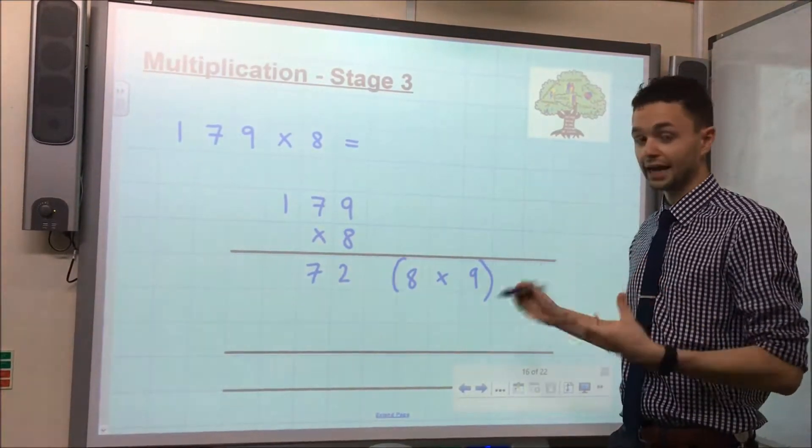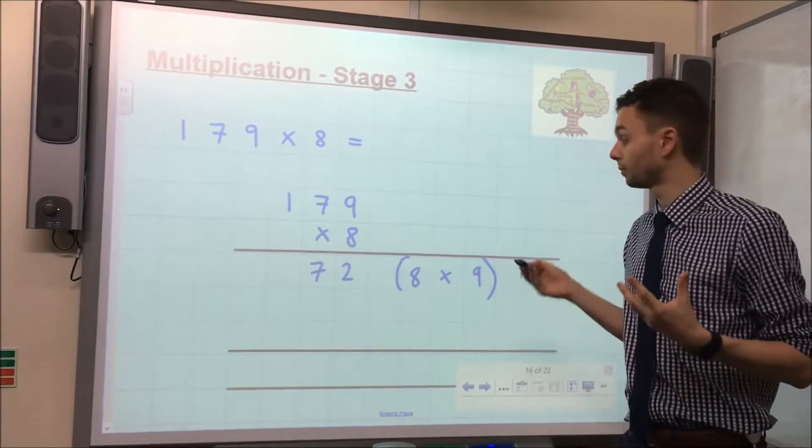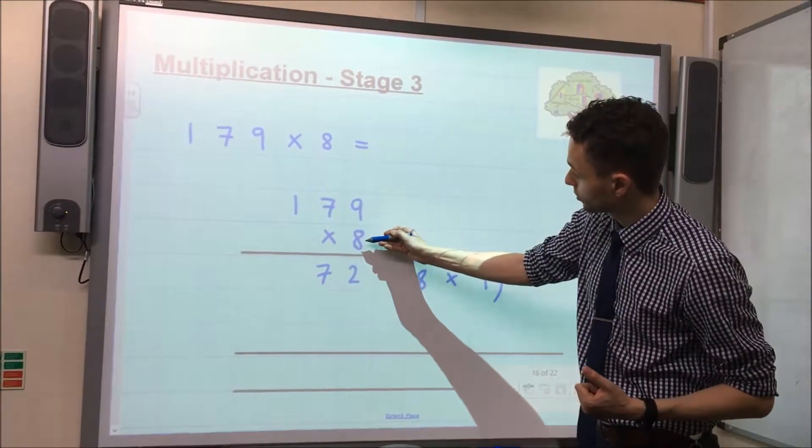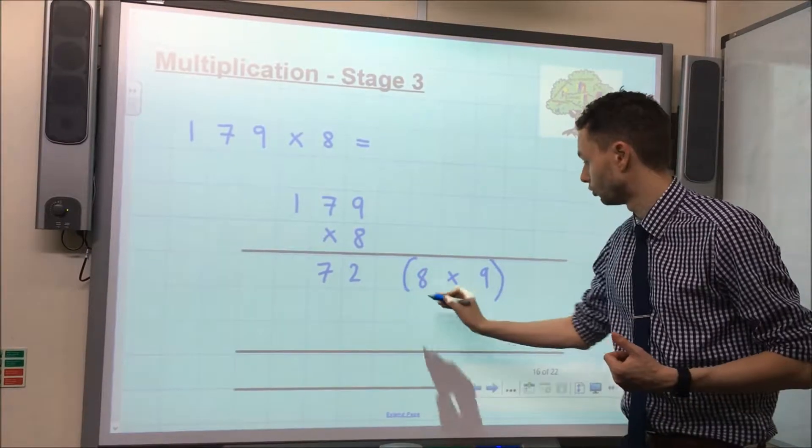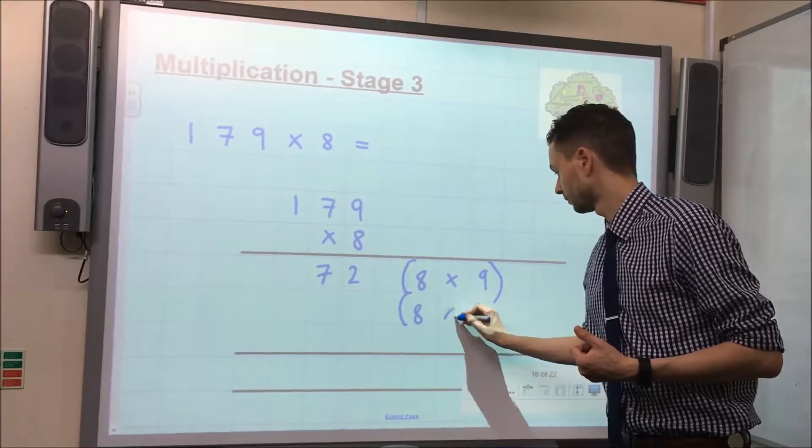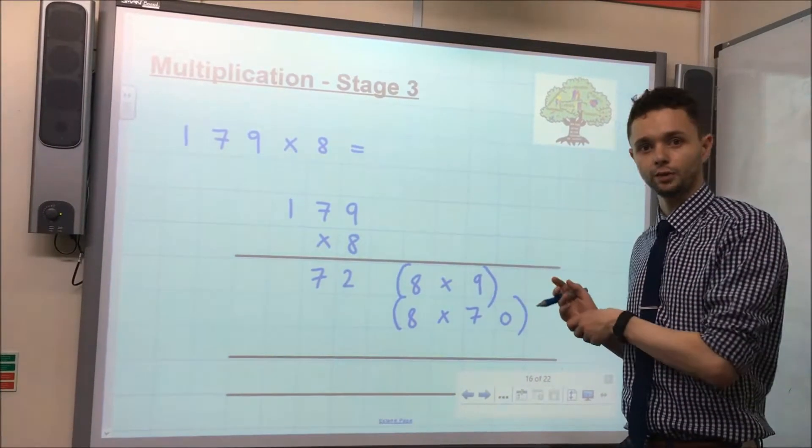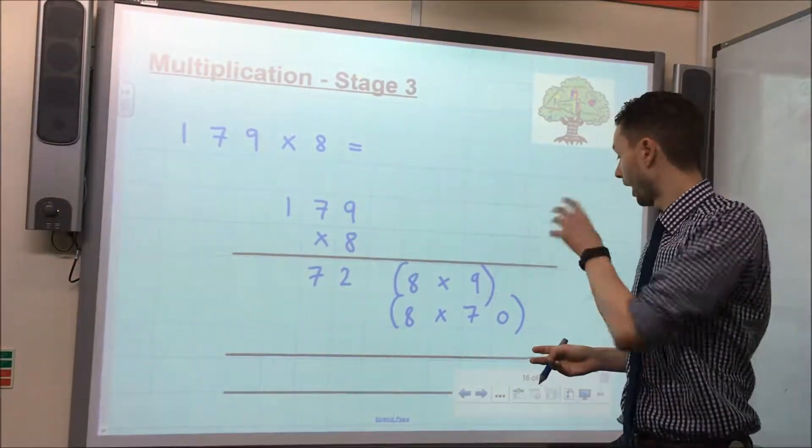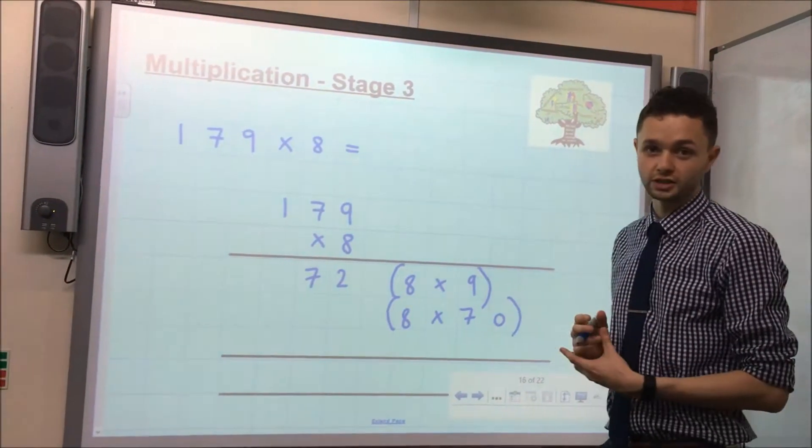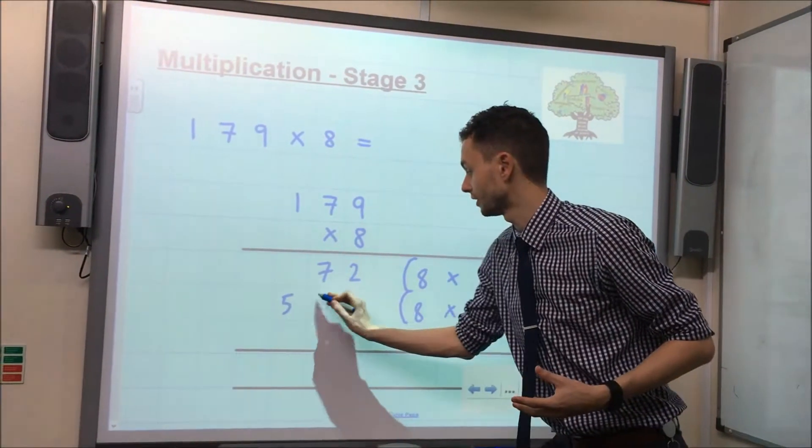The next step of the calculation is to multiply by the tens. So that's 8 multiplied by 7 tens or 70. So 8 multiplied by 7 is 56, multiplied by 10, 560, which we record in the calculation.